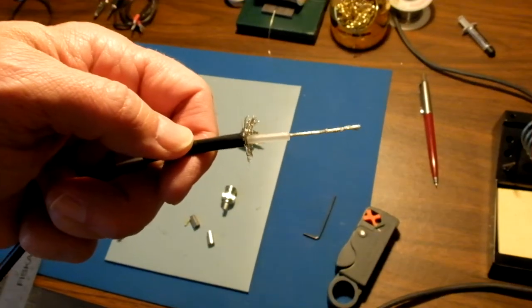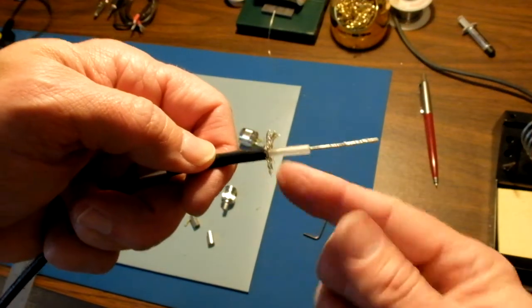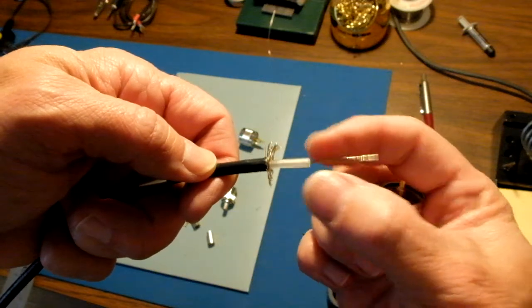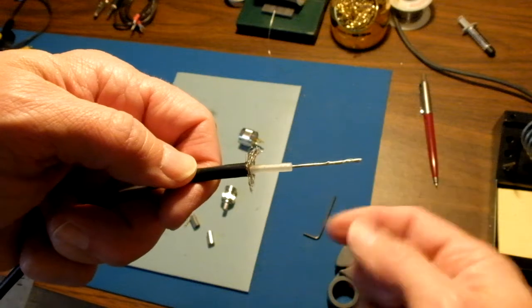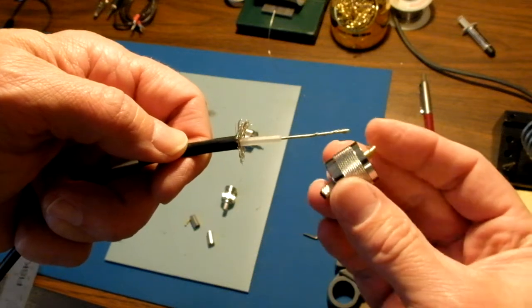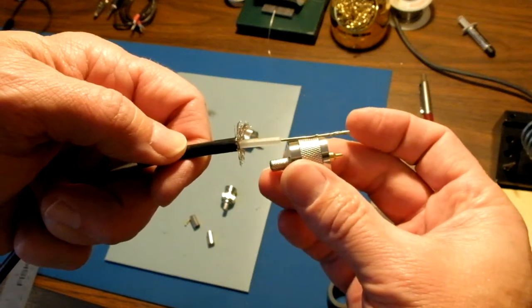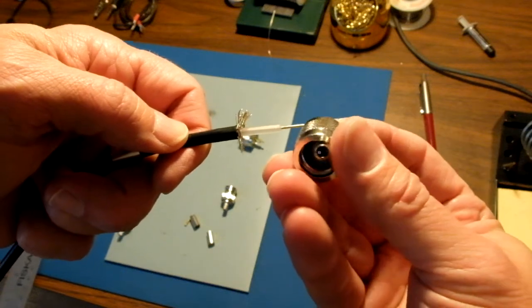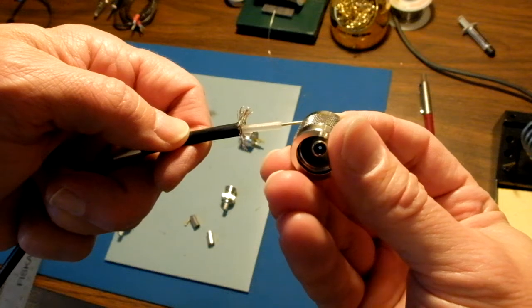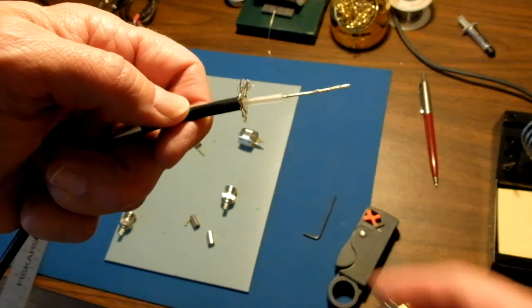Okay, after you've used your stripper, you're going to pull back the braid from the center conductor insulator, and then you're left with your center conductor sticking out. And that's going to go over and through this little opening. You can see there's an opening in the center of the connector. So we're going to push that on.